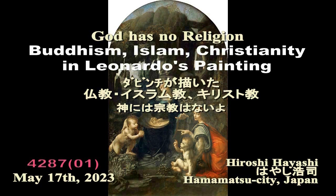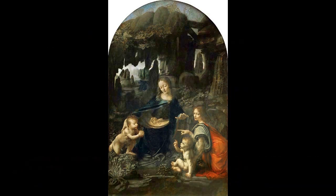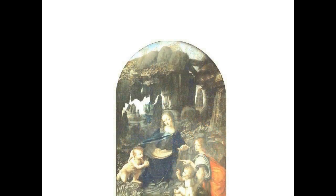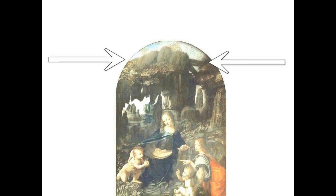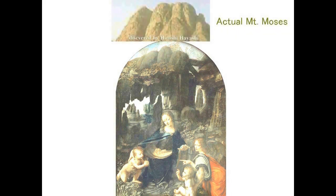This picture is a painting entitled Virgin of the Rocks, said to have been painted by Leonardo da Vinci. A mountain is depicted at the top edge of this painting. Please have a look at the mountain. This mountain has the same shape as Mount Moses, which is located on the Sinai Peninsula today.